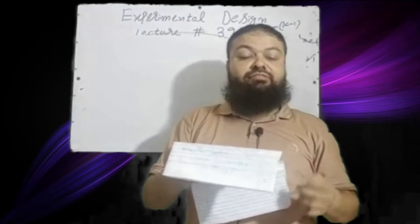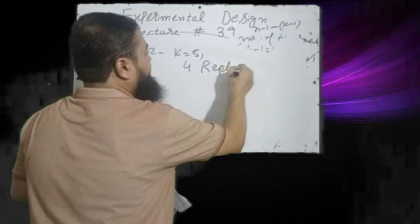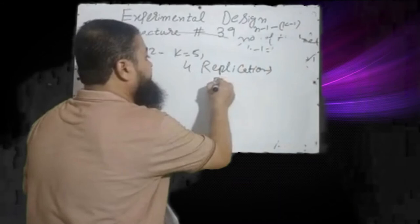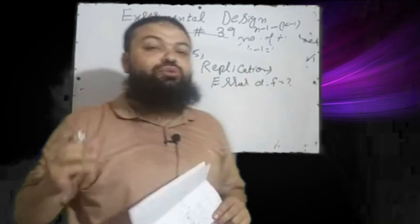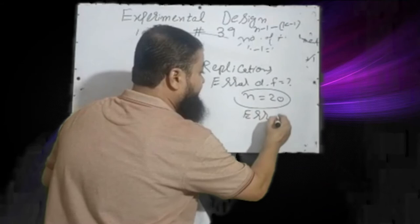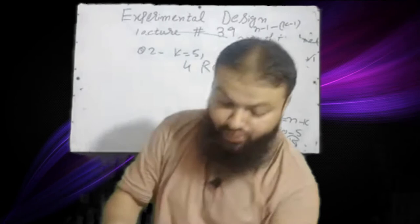Question 2: If there are 5 treatments (K = 5) with 4 replications each, the error degree of freedom for CRD will be? With 5 treatments and 4 replications, total observations N = 5 × 4 = 20. Error df = N − K = 20 − 5 = 15. The correct answer is 15.